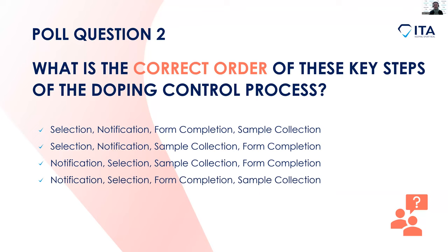Let's close the poll and take a look at the correct answer. 33% of you chose option one. The actual correct answer is option two — the athlete is selected first, then notified, then provides the sample, and then the form is filled in. Well done to those who got it correct. If you didn't, please don't worry — we're going to go through all of this in detail so by the end of the session you should know all the headline information about the doping control process.